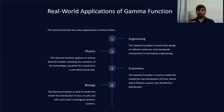In engineering, the gamma function is used to design reflector antennas and waveguide components in microwave engineering. In physics, it appears in solutions of the Schrödinger equation for a particle in a one-dimensional box. In economics, it is used to model the size distribution of firms, which follows a power law distribution. In biology, it models the distribution of sizes of cells and nuclei in biological systems.